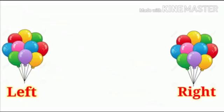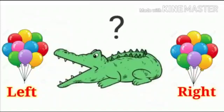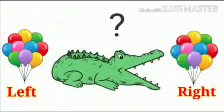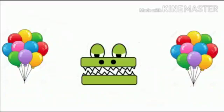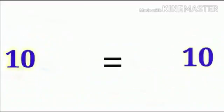Now see, here we have few balloons on the left and right. As both sides are having 10 balloons each, so which side should Krokodai open his mouth — left side or right side? Yes, it is called equal. And if we represent it with a number, we can say 10 is equal to 10.